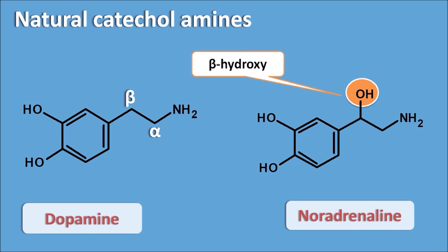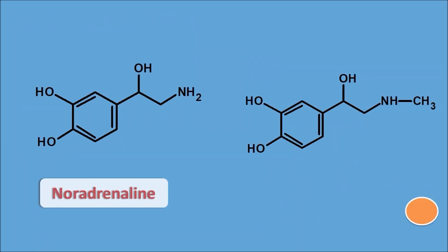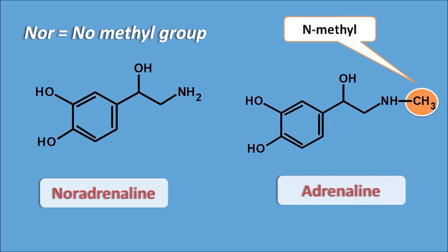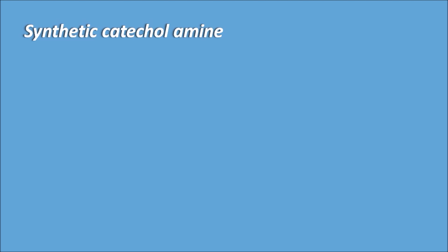Adding a beta-hydroxyl group to dopamine gives noradrenaline. Comparing noradrenaline with adrenaline: adrenaline has an N-methyl substitution on the nitrogen. The prefix 'nor' in noradrenaline indicates there is no methyl group on the nitrogen, whereas adrenaline does have the methyl group on the nitrogen.